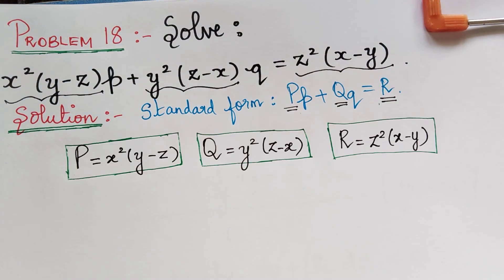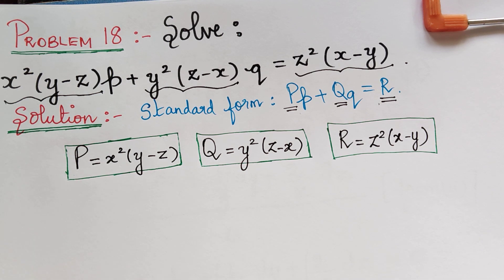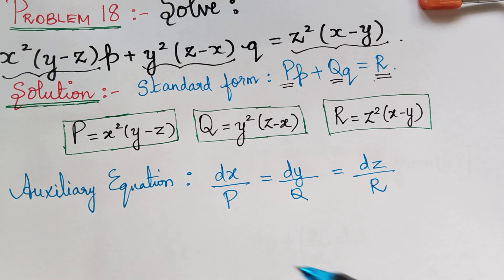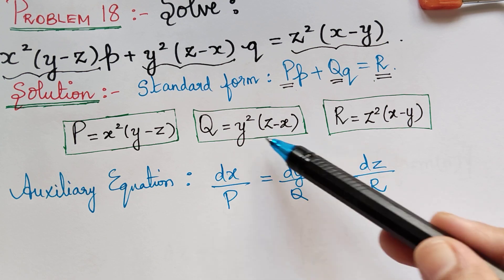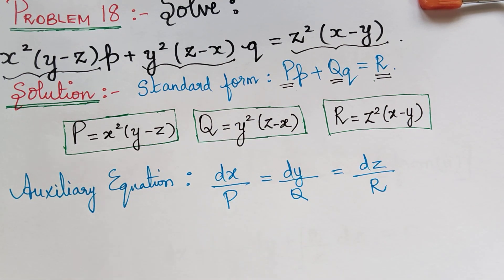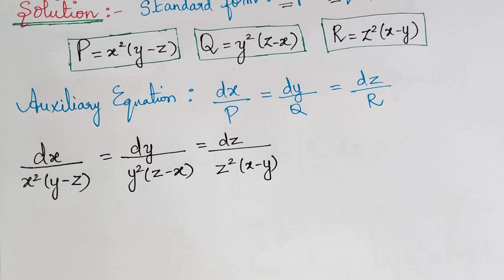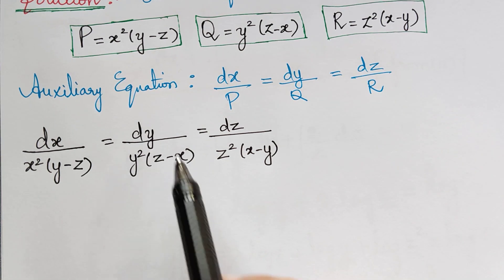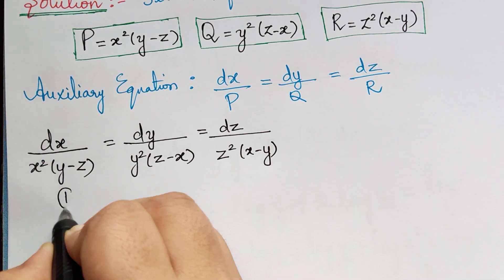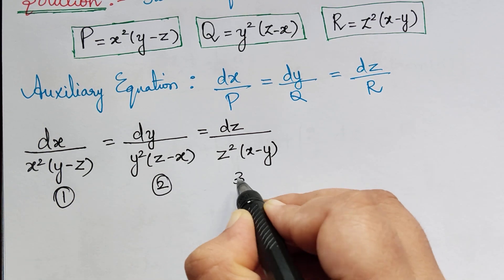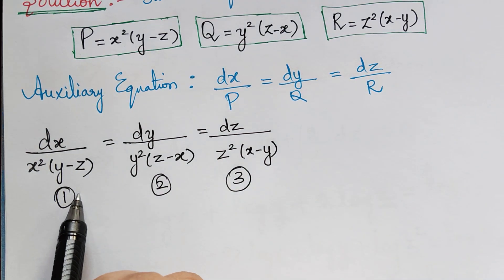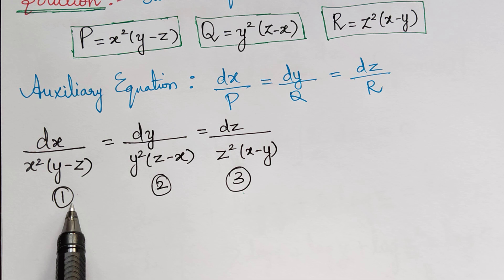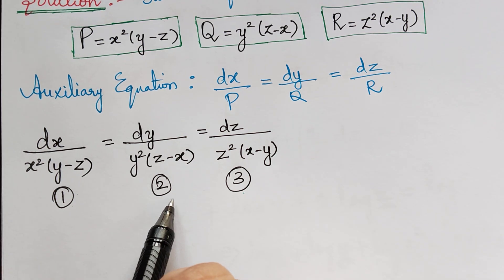Next, we have to write the auxiliary equation of the Lagrange's partial differential equation. After writing the auxiliary equation, we substitute the values of P, Q and R. We mark the ratios as 1, 2, and 3, and check which method to apply — whether the method of grouping or the method of multipliers.